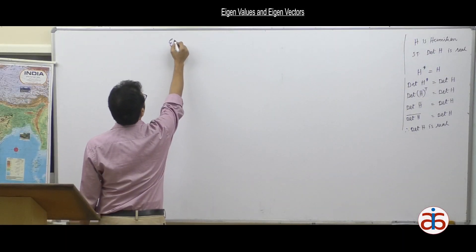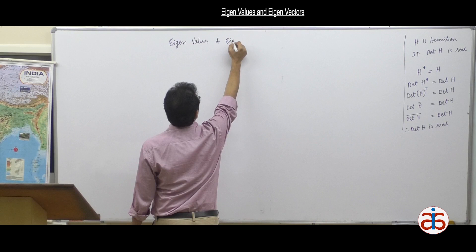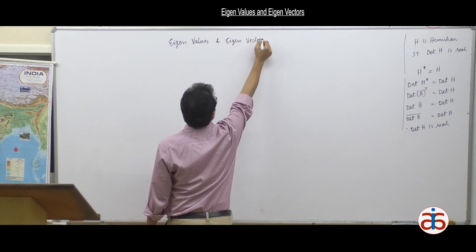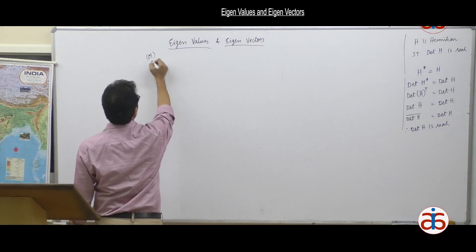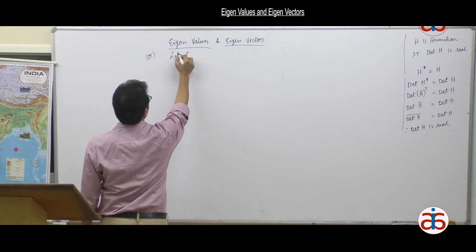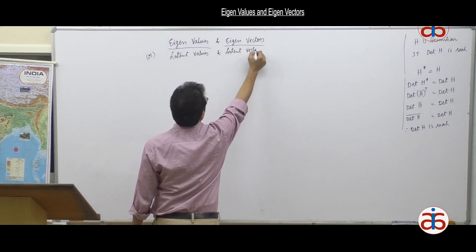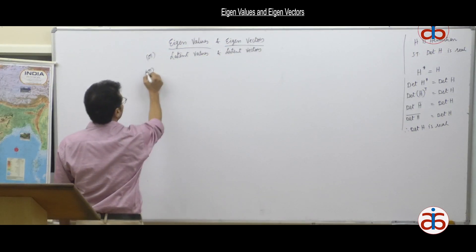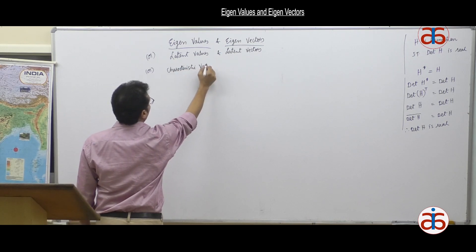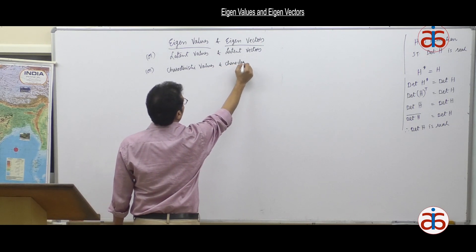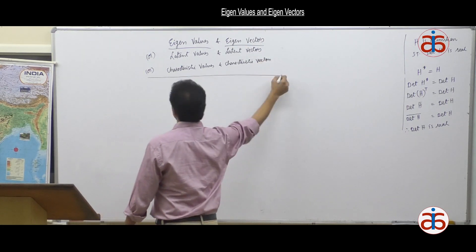Eigenvalues and eigenvectors are sometimes also called latent values and latent vectors, or characteristic values and characteristic vectors — all the same.